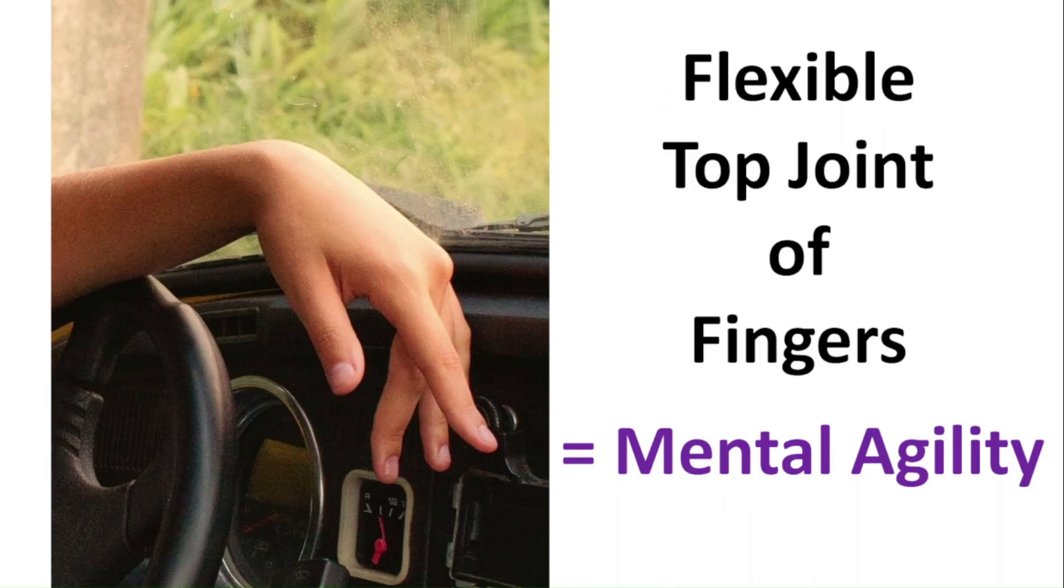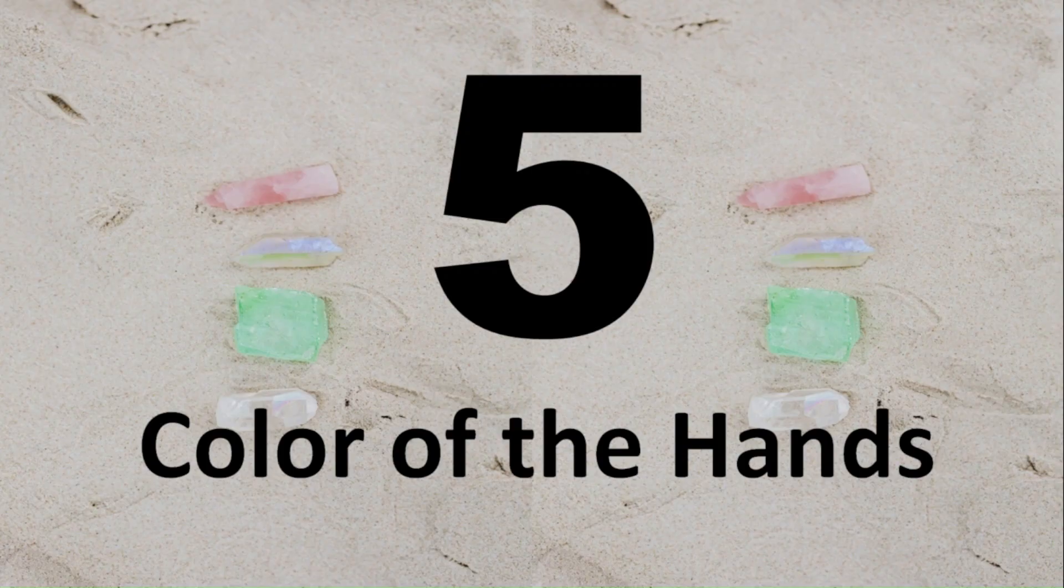Now let's take a look at how a flexible finger looks like. Notice how the top joints of these fingers bend backwards slightly. When the top joint is flexible, it means the person is mentally agile. As we'll see later, the top joints of the fingers rules the mental world.